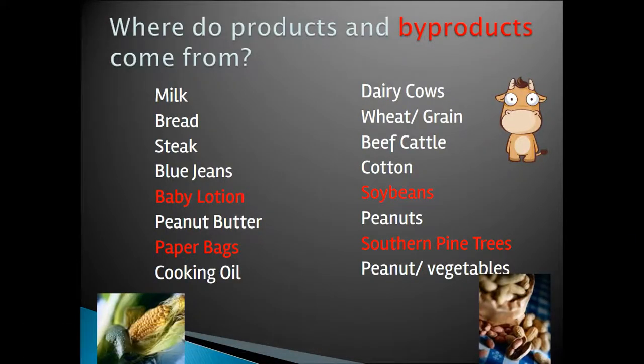Let's take a look at some examples. As you look at the examples on the screen, you'll notice that the majority of items listed are products: bread from wheat, blue jeans from cotton, peanut butter from peanuts, and cooking oil from peanuts or vegetables.